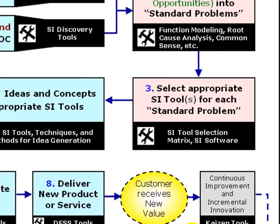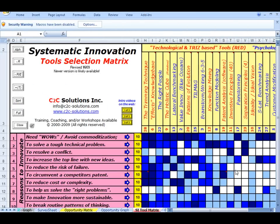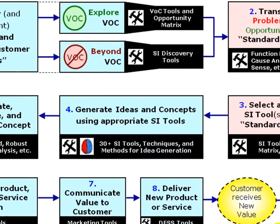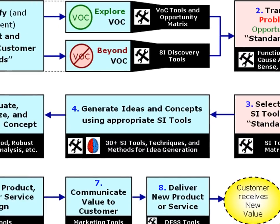In Step 3, we select the right innovation tool for the job, knowing that not all innovation tools are created equal. You remember the tool selection matrix. Which brings us to Step 4: generating ideas and concepts using one or more of the appropriate systematic innovation tools.